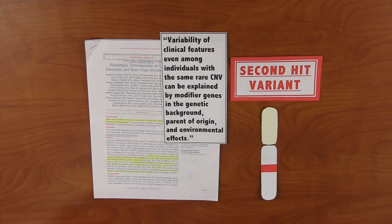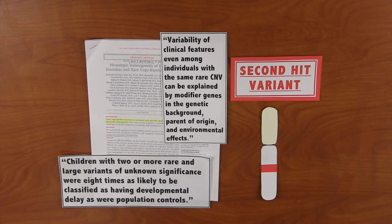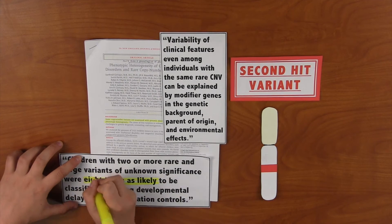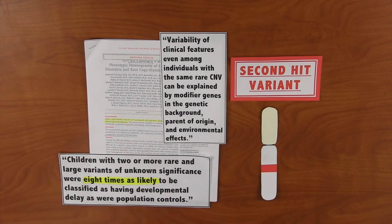It's noted that children with two or more of these variants, even ones with unknown significance, were eight times as likely to be classified as having developmental delay, when compared to those children that did not possess such variants.